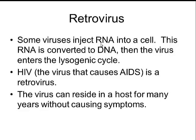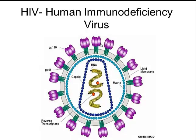The virus can reside in a host for many years without causing symptoms. Some people can have HIV for years and not know it, because it's not until the cells start getting destroyed that you begin to show the signs of AIDS. The HIV virus has RNA on the inside and a special enzyme called reverse transcriptase. When it's injected into the host cell, reverse transcriptase converts the RNA back into DNA so it can become part of the host cell.